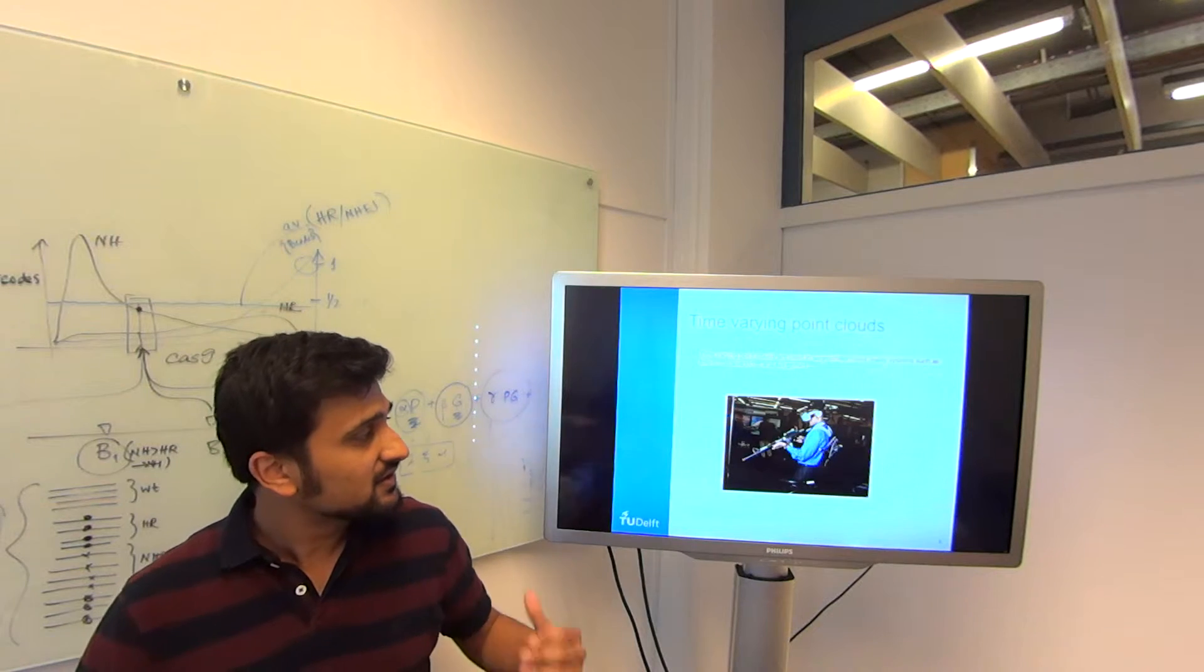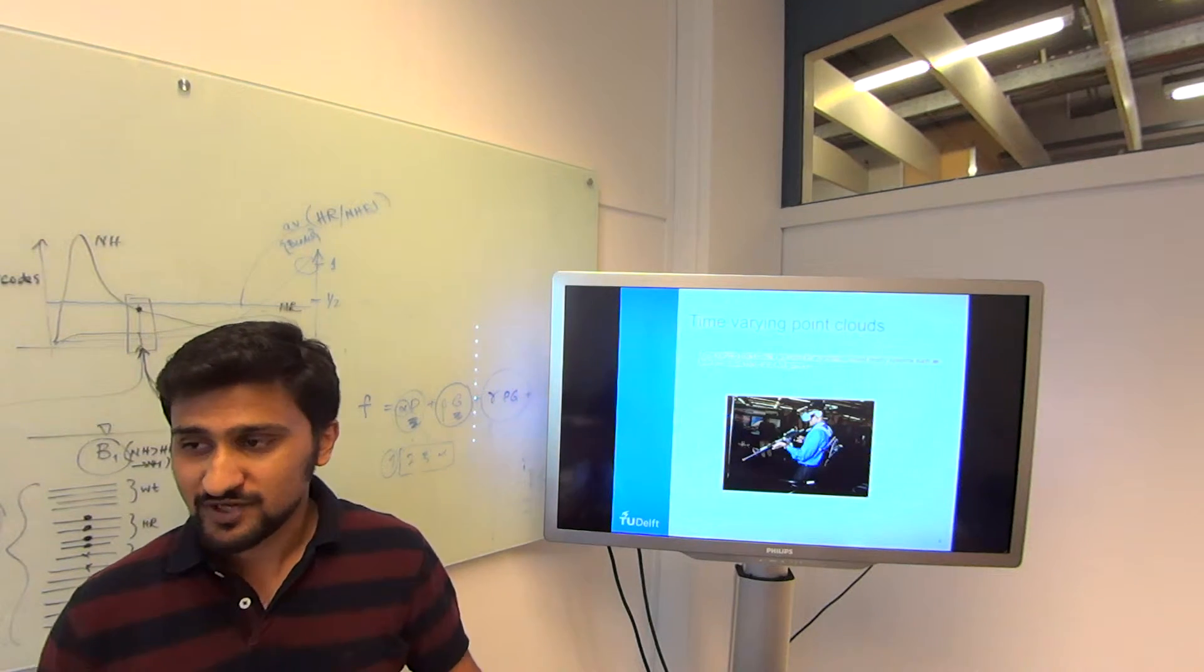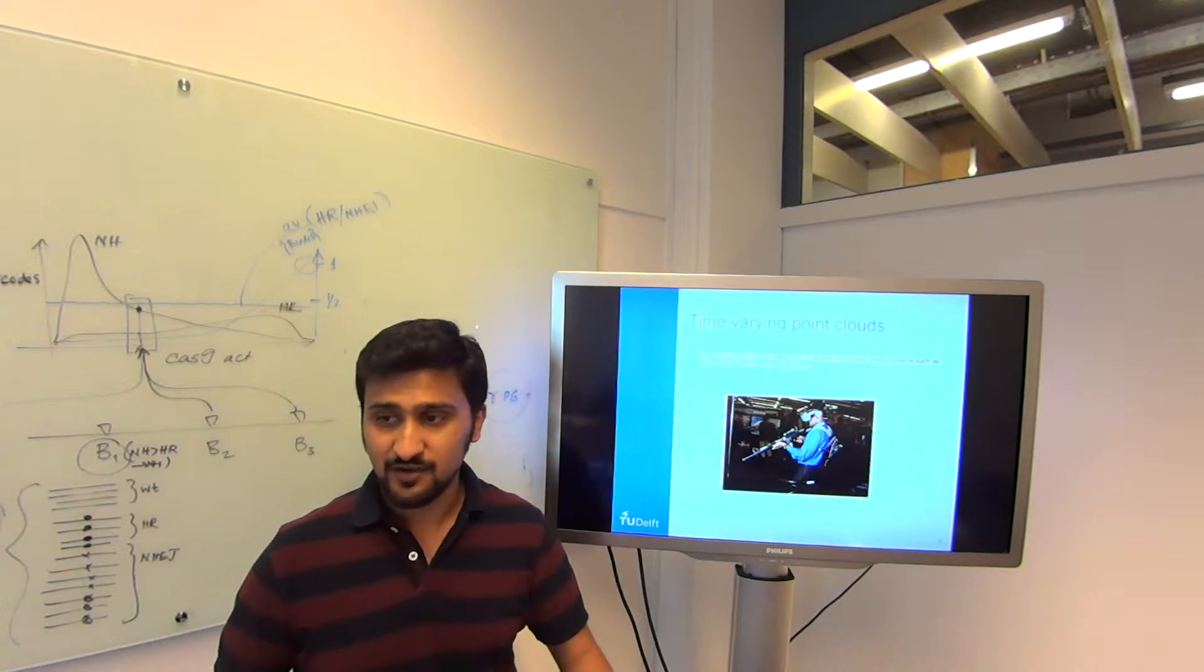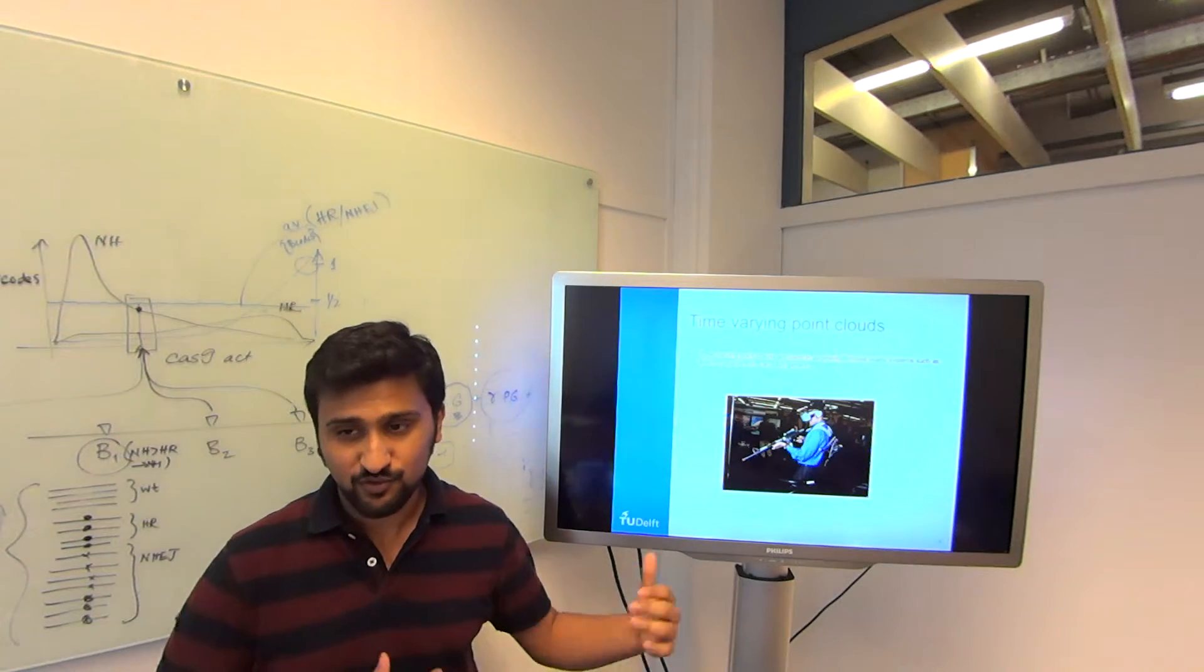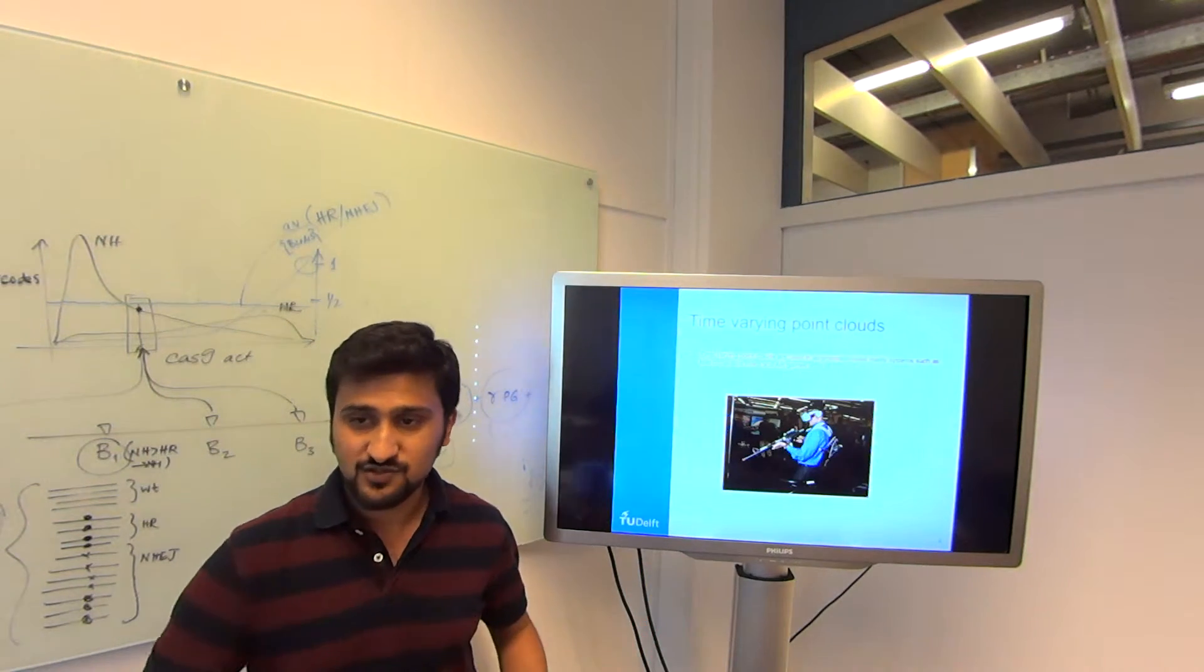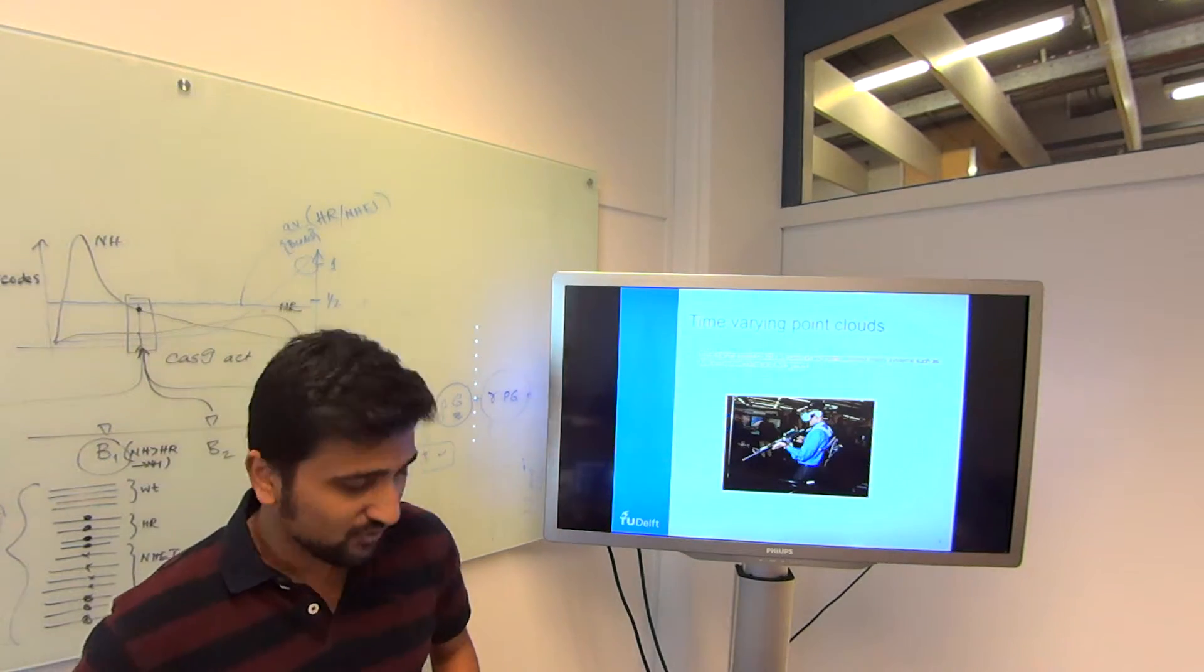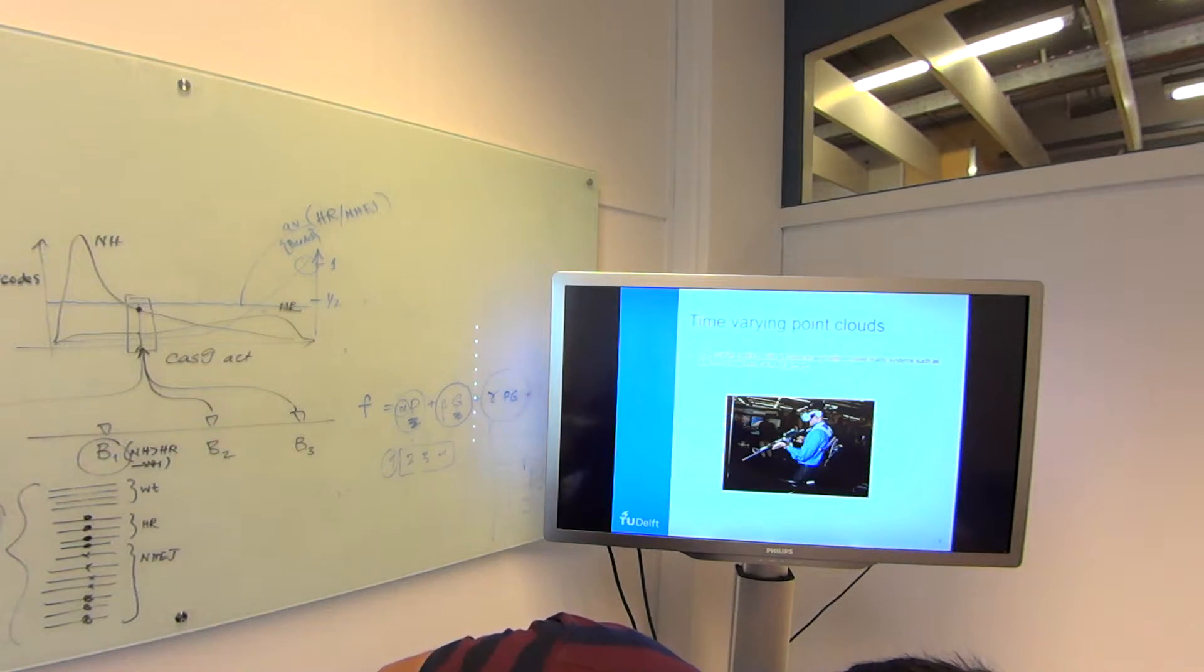The thing about static point clouds was, the compression is basically geometric and spatial. These are compressed one frame at a time. But when you talk about time varying, you even have the temporal aspect. You can exploit the temporal redundancies based on the correlation between subsequent frames. That's one extra way that you can compress time varying point clouds.